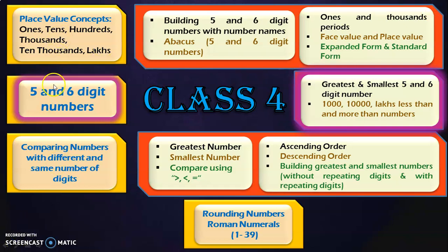To begin with, these are all the learning outcomes which you will be seeing in class 4 under the concept of numbers: place value concepts, number activities on 5 and 6 digit numbers, comparing numbers, rounding numbers, and writing Roman numerals 1 to 39. I have dealt with each of these learning outcomes in separate videos, and links for the same are given below in the description box.